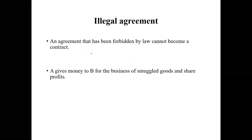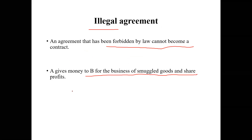The last type under enforceability is the illegal agreement. Some contracts involve an agreement that is illegal — forbidden by the country's law. For example, A gives money to B for the business of smuggled goods and to share profit. Sharing profit is fine in partnerships, but doing business in smuggled goods is forbidden by law, making this an illegal agreement.